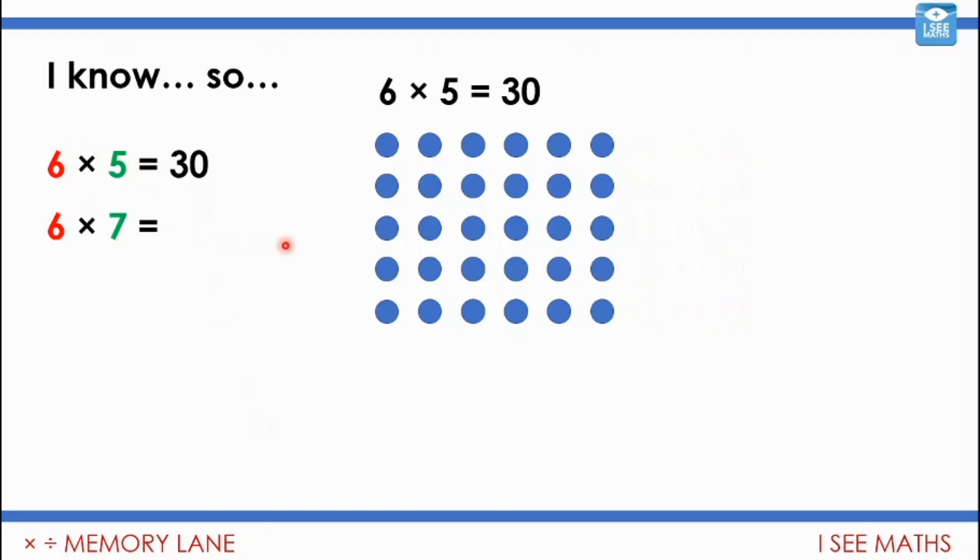Let me give you a go at this example. 6 times 5 equals 30. What about 6 times 7? How's the picture going to change and how are those number facts related? Pause the video.